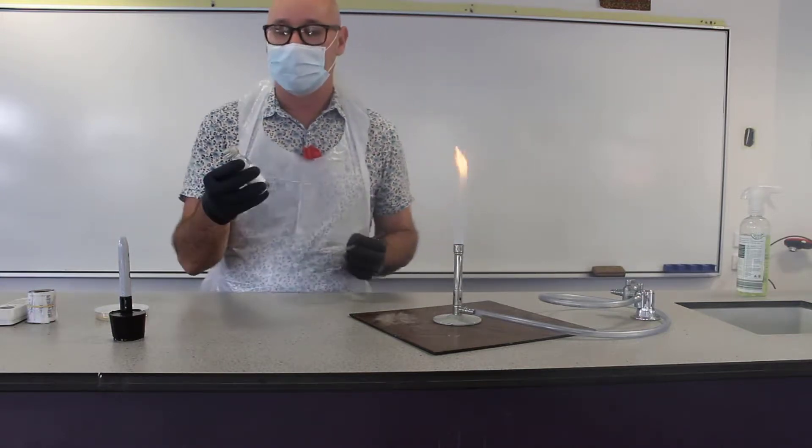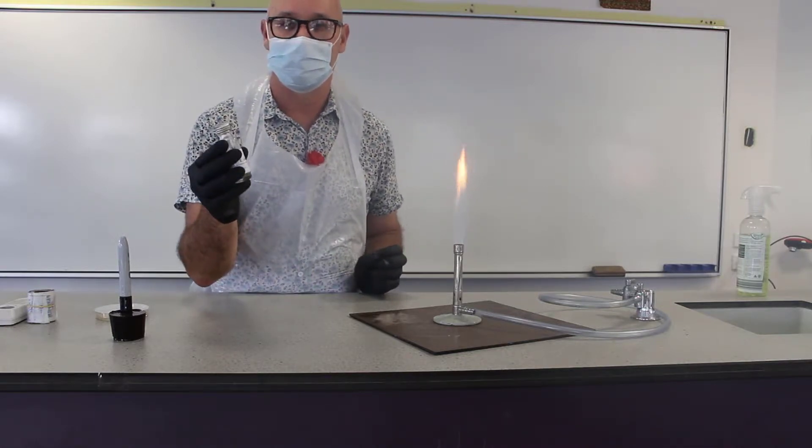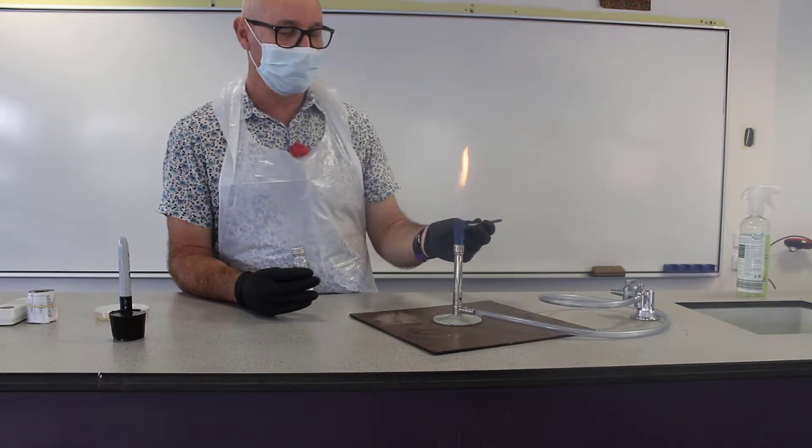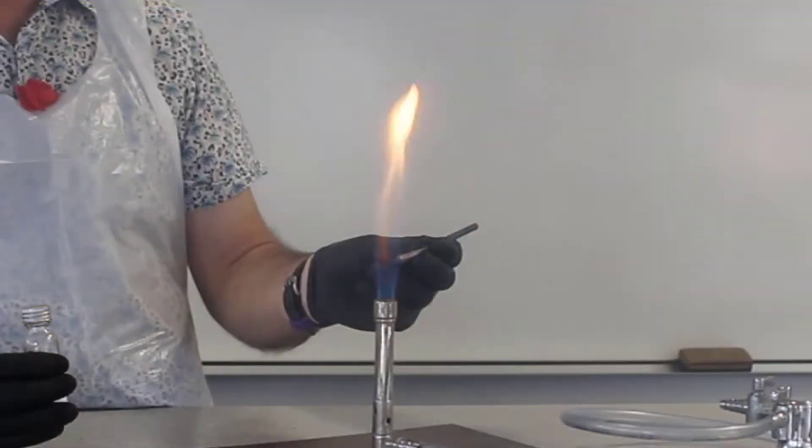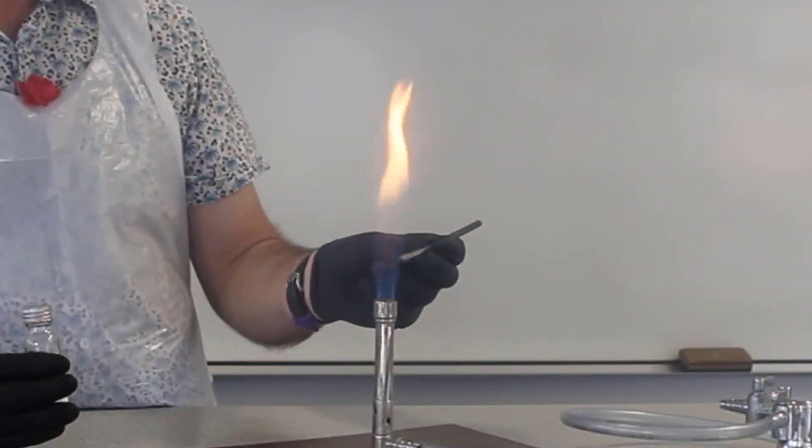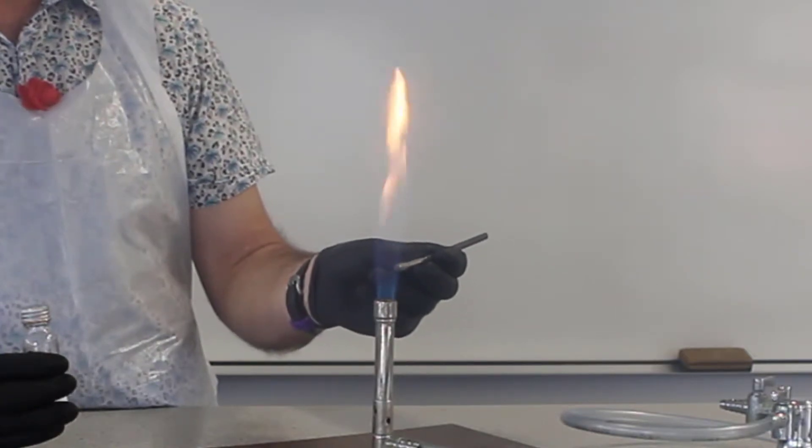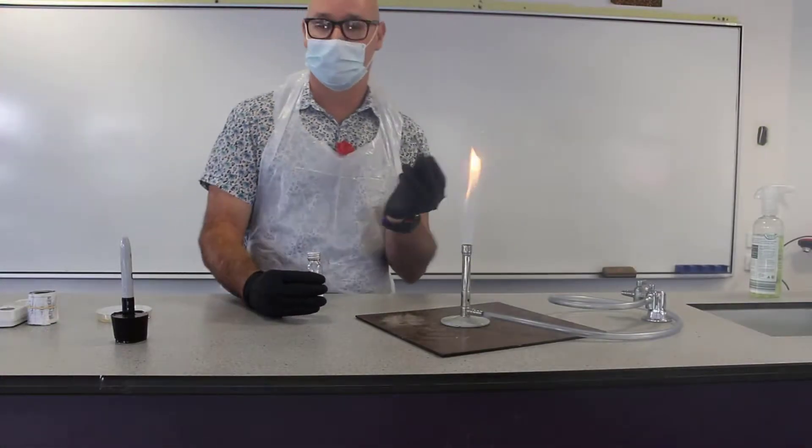We've also got our bacteria in the broth, in a glass jar. Alright, so the first thing we need to do is flame our loop. We're going to make the loop red hot, so it's actually going to glow red hot all the way to the end of the loop and back. Then we're going to allow that to cool down.